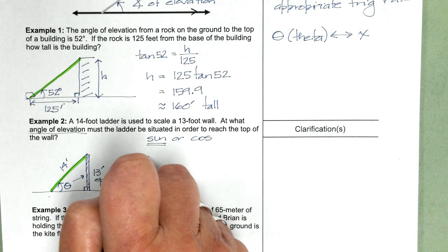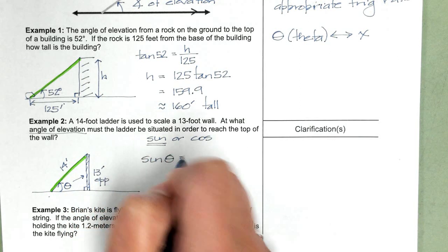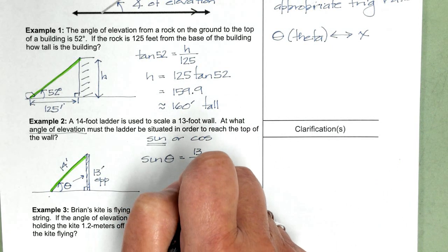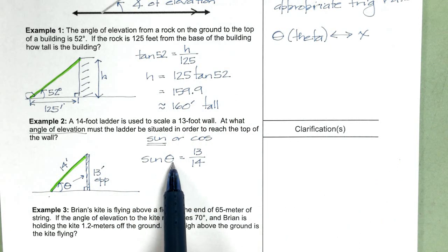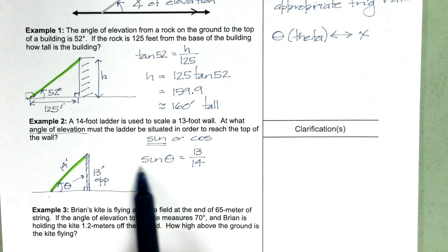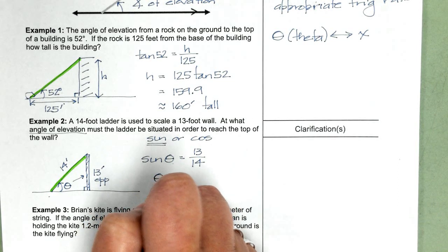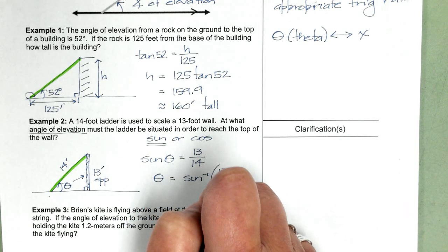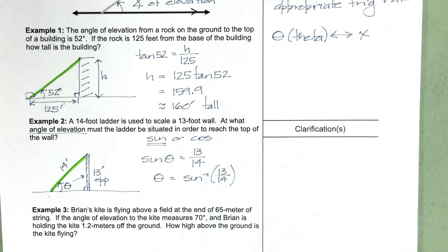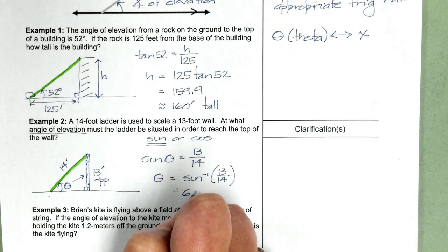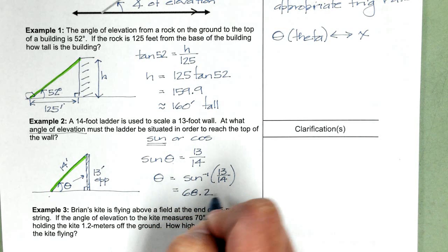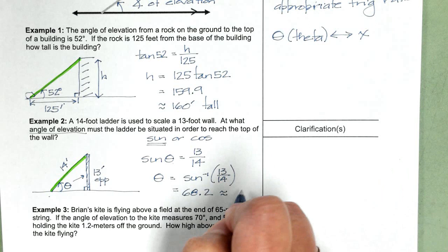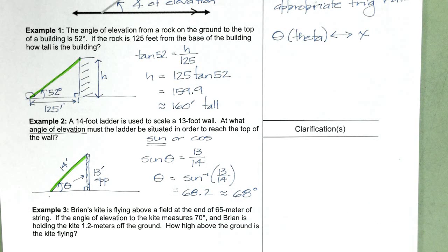Our setup, sine of theta equals the opposite, 13, over the hypotenuse, 14. So as in our previous lesson, to find theta, we're going to use the inverse sine. So we have theta equals inverse sine of 13 divided by 14, and we get 68.2. We've been rounding our angles to the nearest degree, so if we round this to the nearest degree, we have 68 degrees.